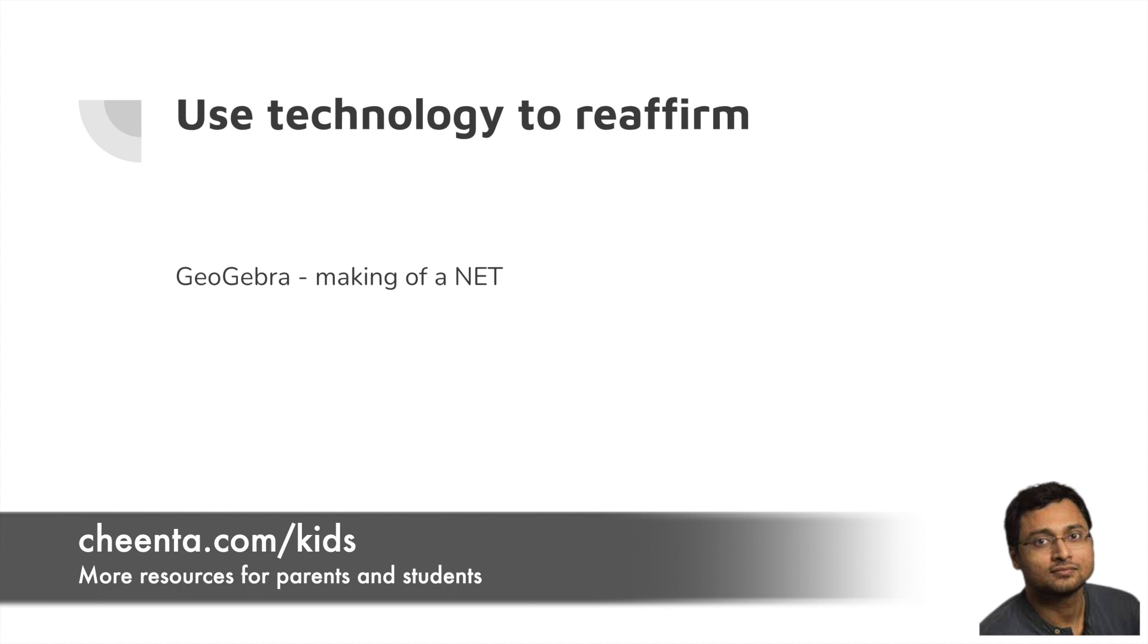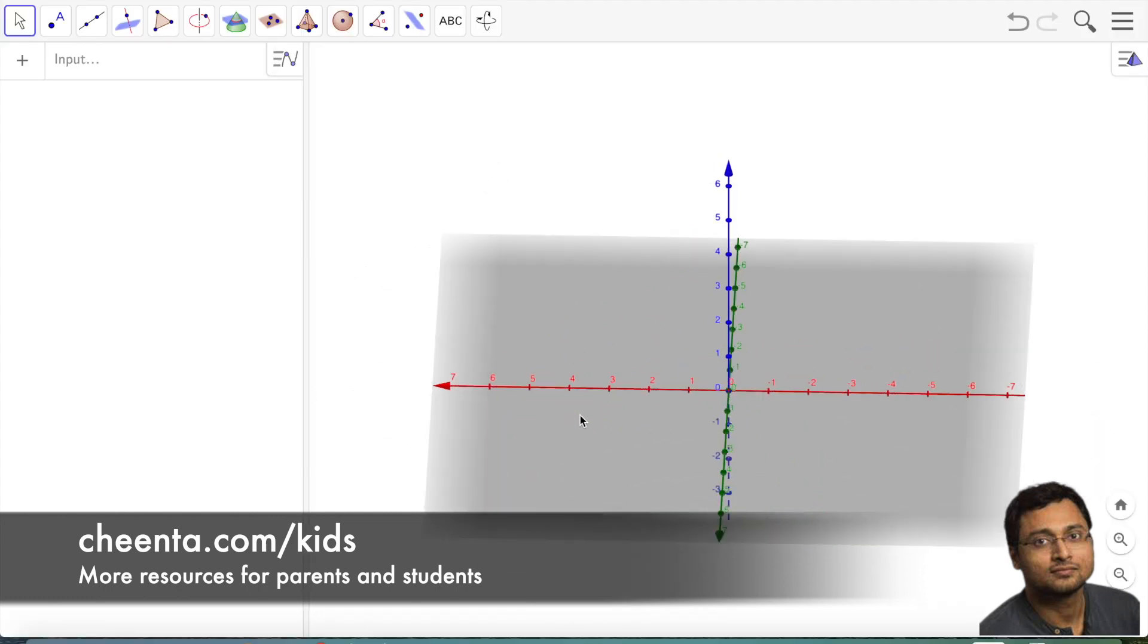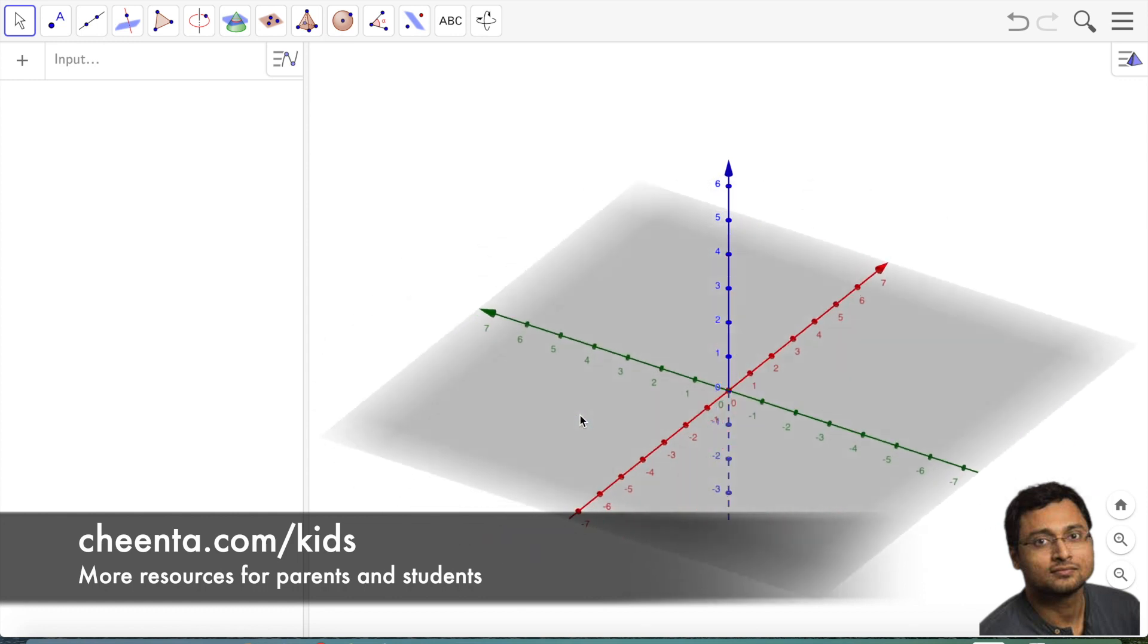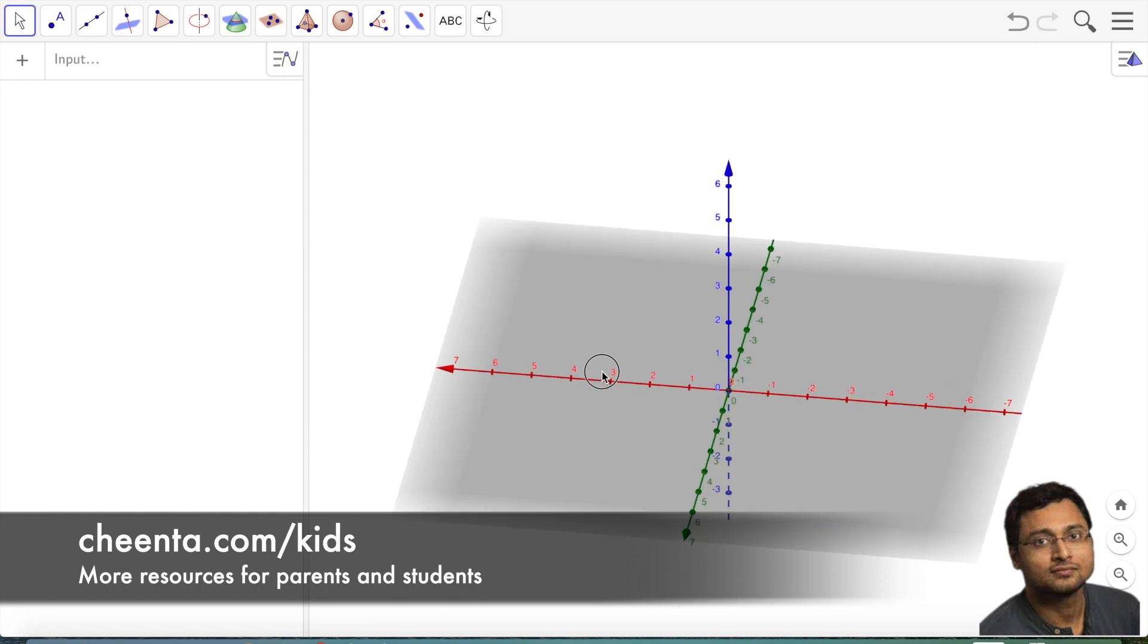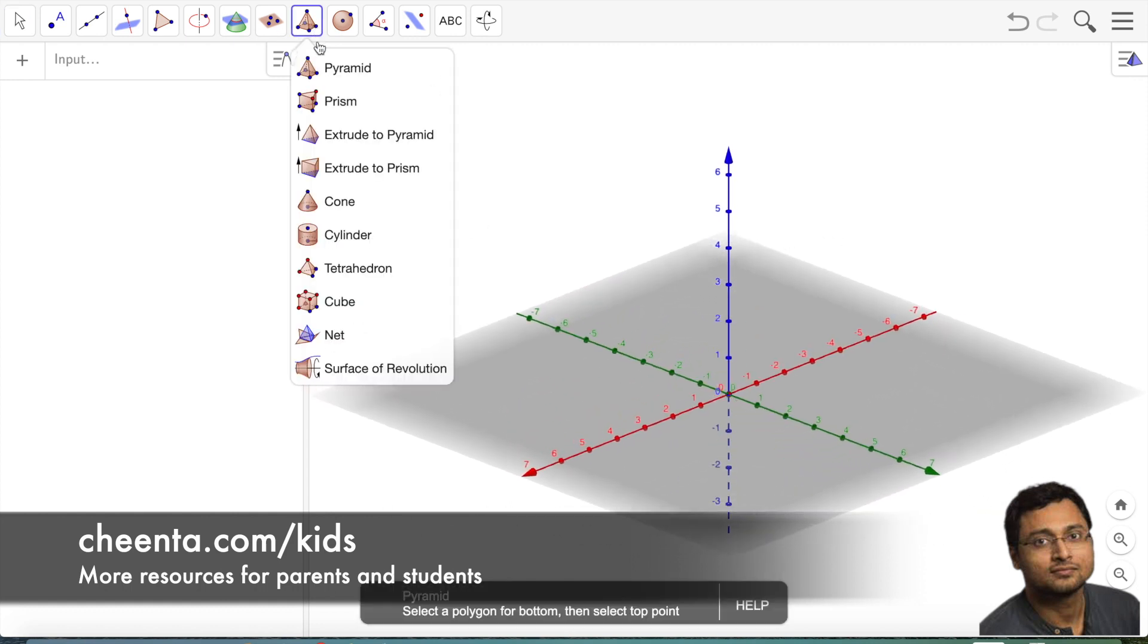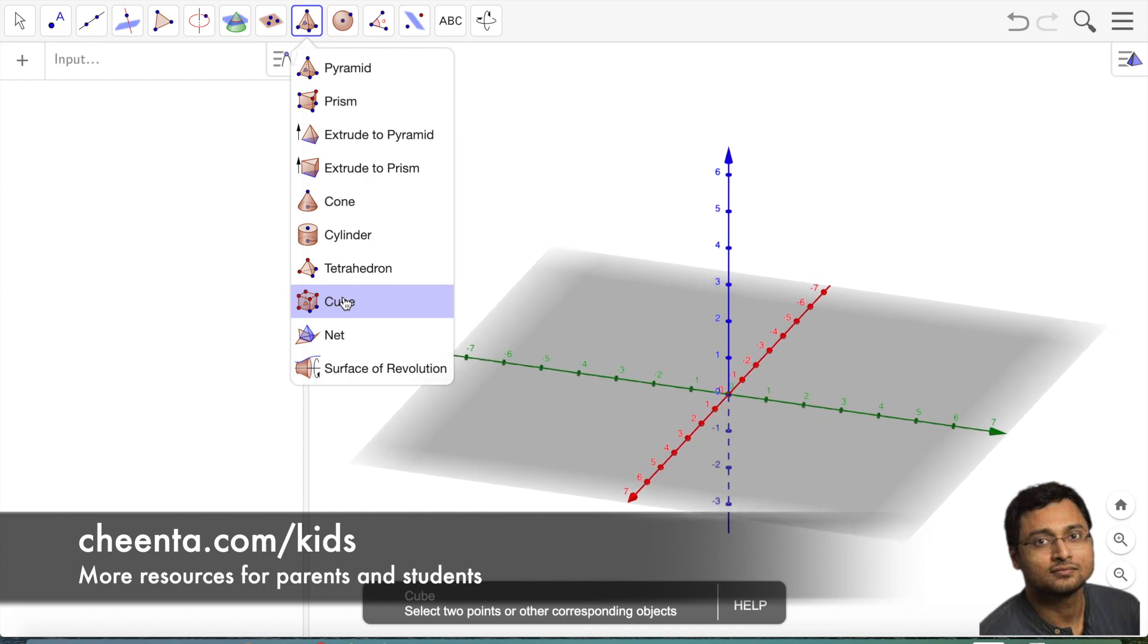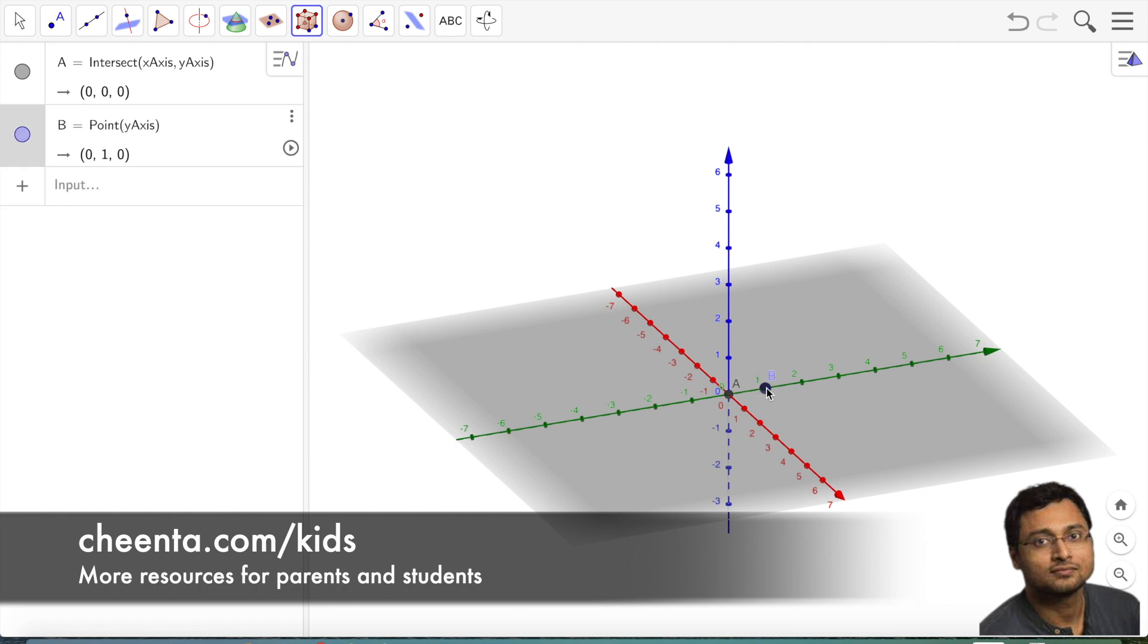I will show you how. In GeoGebra, we have a three-dimensional palette like this one. We have many tools that we can use. One of the tools is the cube tool. Let's click on two points and we will immediately have one cube.